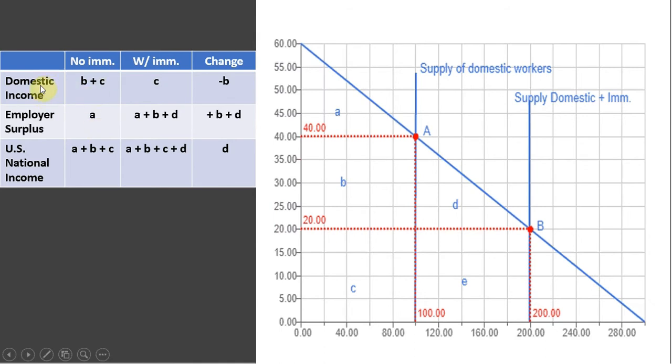So let's start up here. Domestic income, the amount of income that workers get without immigration, is going to be area B and C. Okay, this big rectangle, just B and C. And if we wanted to, we could calculate the value as 40 times 100. So 40 times 100, or area B and C, is the amount of labor income to domestic workers.